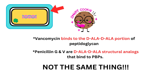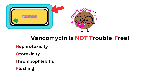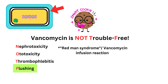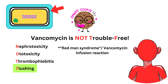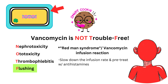Vancomycin is generally well-tolerated but can cause nephrotoxicity, ototoxicity, thrombophlebitis, and diffuse flushing. A common side effect is Red Man Syndrome, or vancomycin infusion reaction, characterized by a sudden onset of redness, rash, and flushing of the face, neck, and upper body. It occurs with rapid infusion and symptoms can include pruritus, urticaria, and hypotension. It can be prevented by slowing the infusion rate and pretreating with antihistamines.